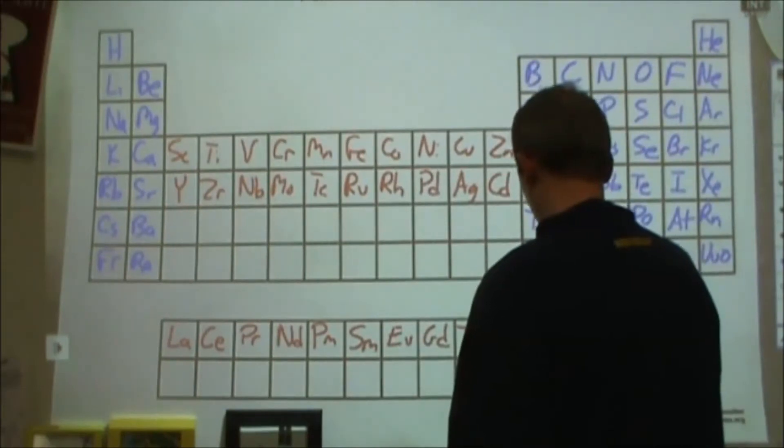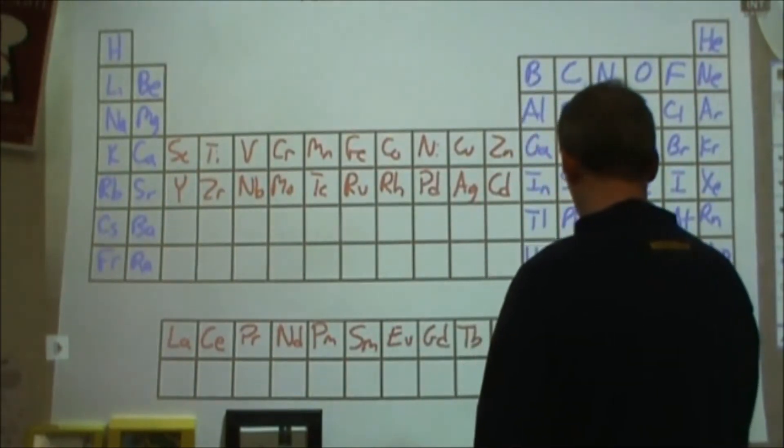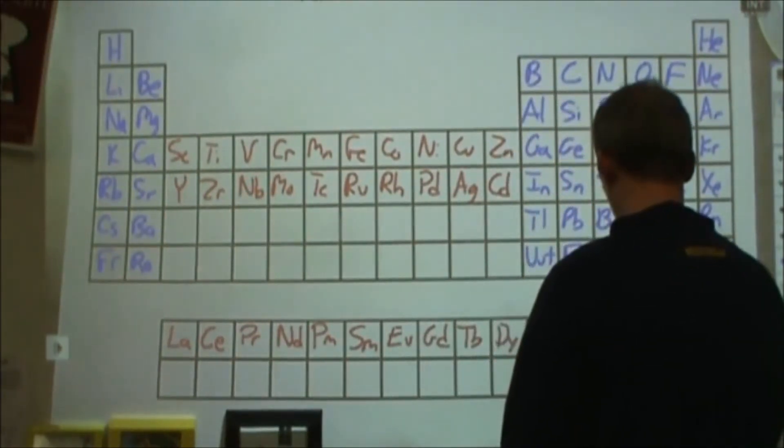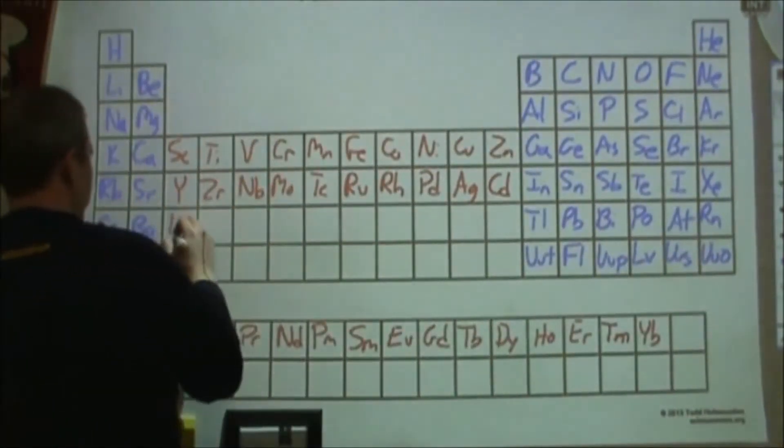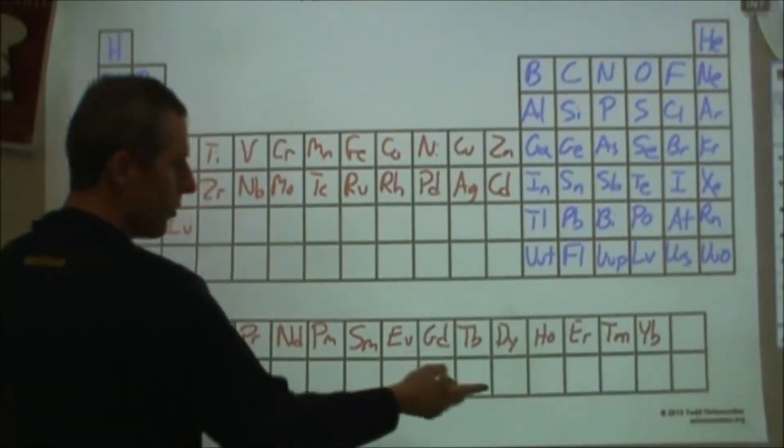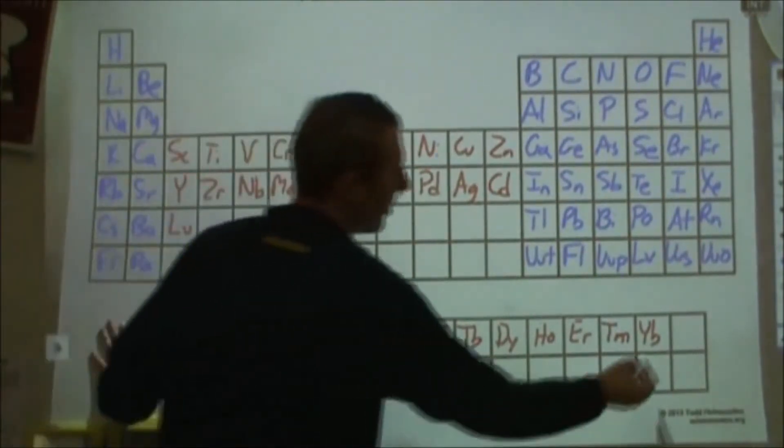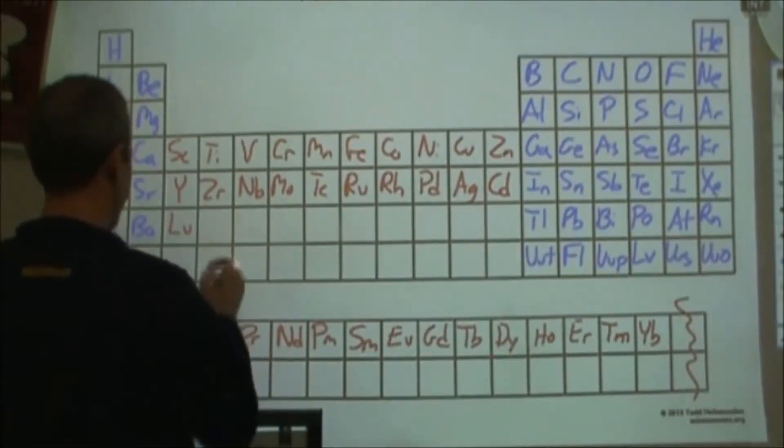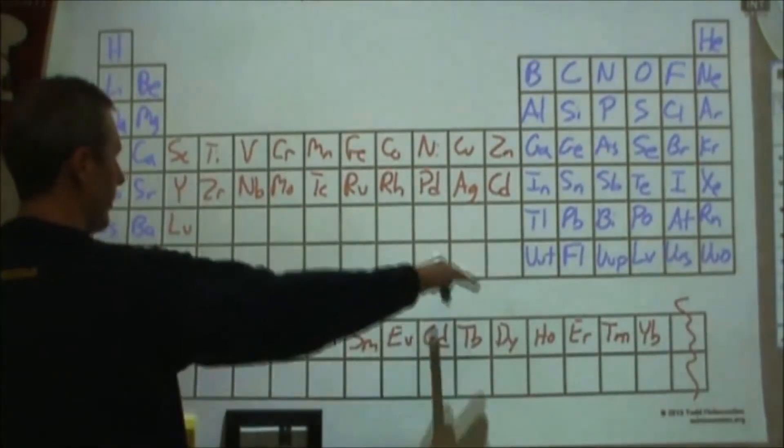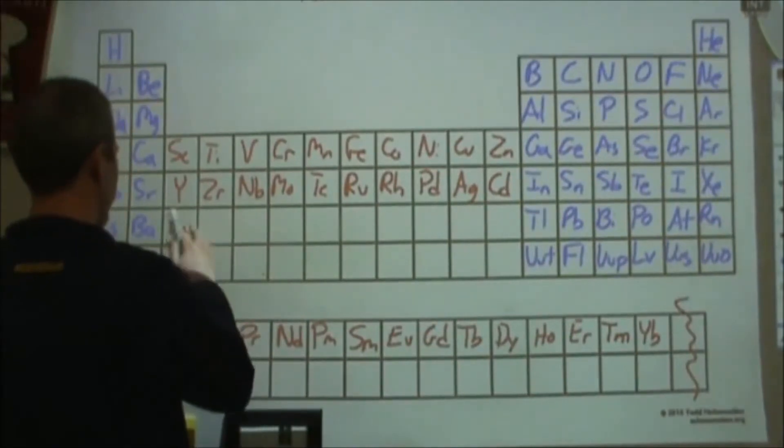And then after terbium there's dysprosium, holmium, and erbium, followed by thulium, and ytterbium. And that brings us over to lutetium over here. We're just going to stick with it starting with our transition metals here with lutetium.